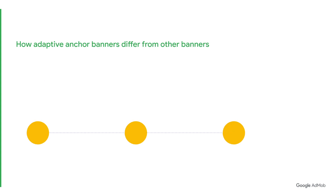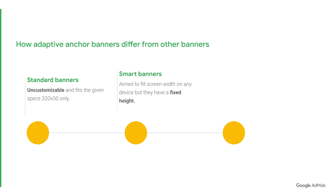To explain why Adaptive Anchor Banners should be implemented in your apps, we need to discuss the standard banners and smart banners currently available. Standard banners are uncustomizable and available only in a 320x50 size. Smart banners aim to dynamically fill screen width on any device, but they also have a fixed height, so they frequently return ads that are too small in height.